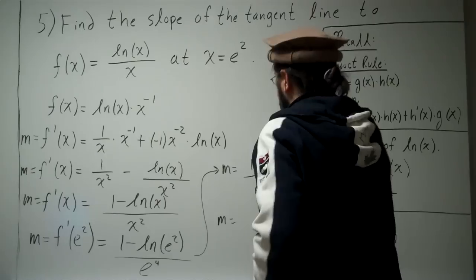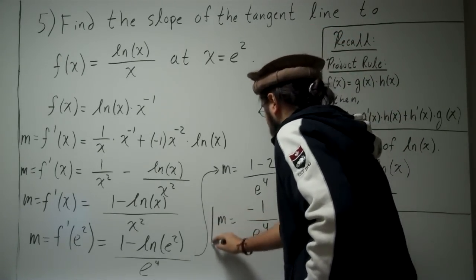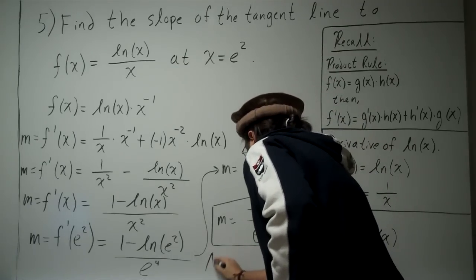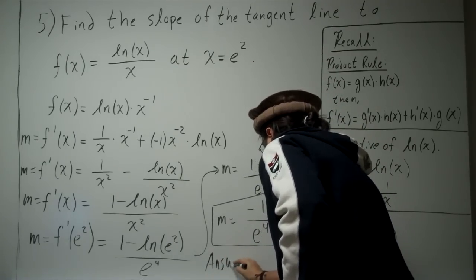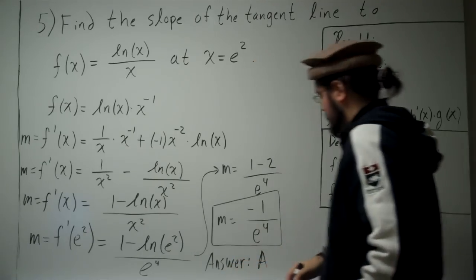But 1 minus 2 is minus 1, divided by e to the fourth.